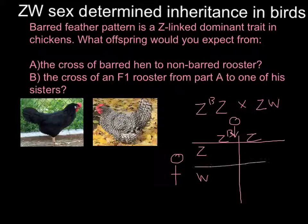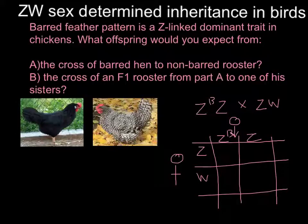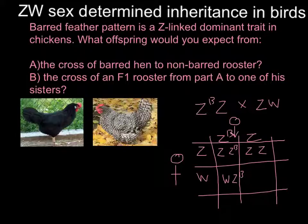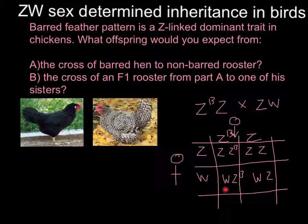To solve this problem we also build a Punnett square. On this side is the male (Z/Z^B) and here is the female (Z^W). Filling in the squares: we get Z/Z^B, Z/Z, W/Z^B, and W/Z (normal). The two ZZ boxes are males and the two W boxes represent females.